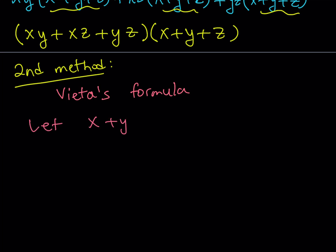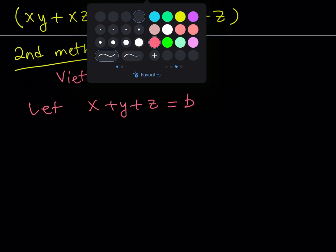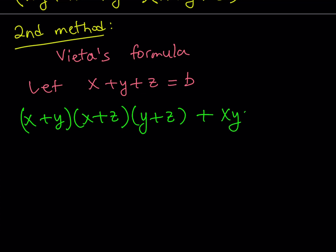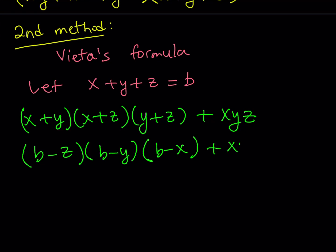Let X plus Y plus Z equal B. You might be asking why we're doing this — it makes sense if you look at Vieta's formulas. By this assumption I can assign any variable to any quantity, but my goal is to use this efficiently in my expression and make it factorable. So let's substitute this into our original expression, which is X plus Y multiplied by X plus Z multiplied by Y plus Z, and then we're adding XYZ. If X plus Y plus Z equals B, then X plus Y is just B minus Z, X plus Z is B minus Y, and Y plus Z is B minus X. We don't worry about XYZ for now — at the end it's going to simplify.